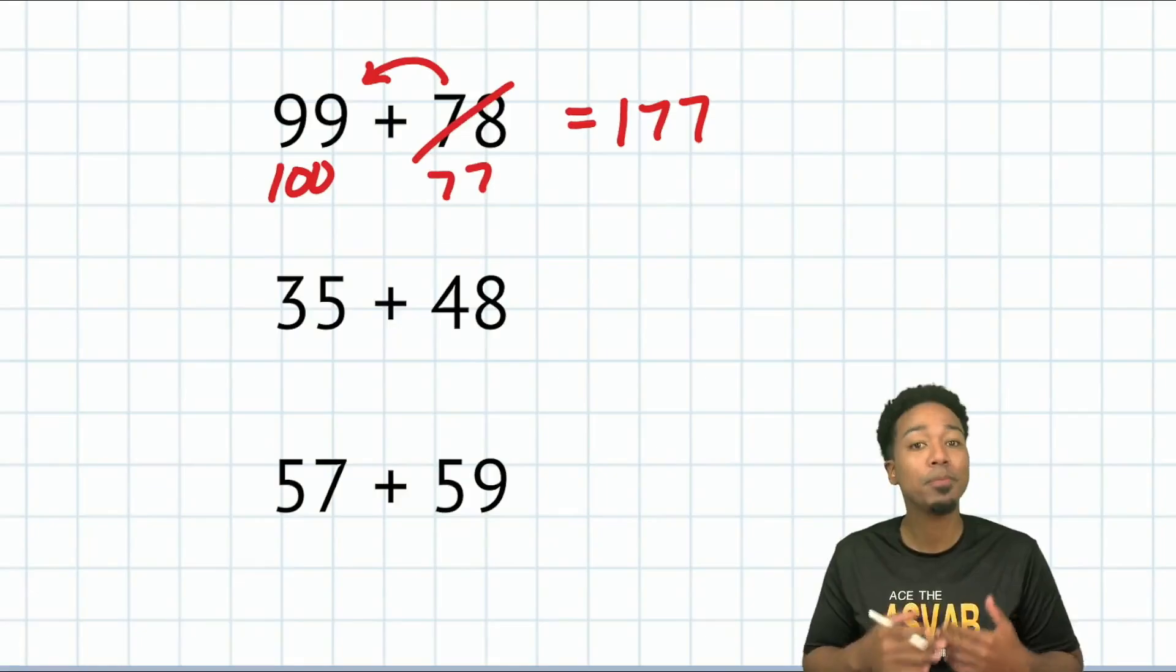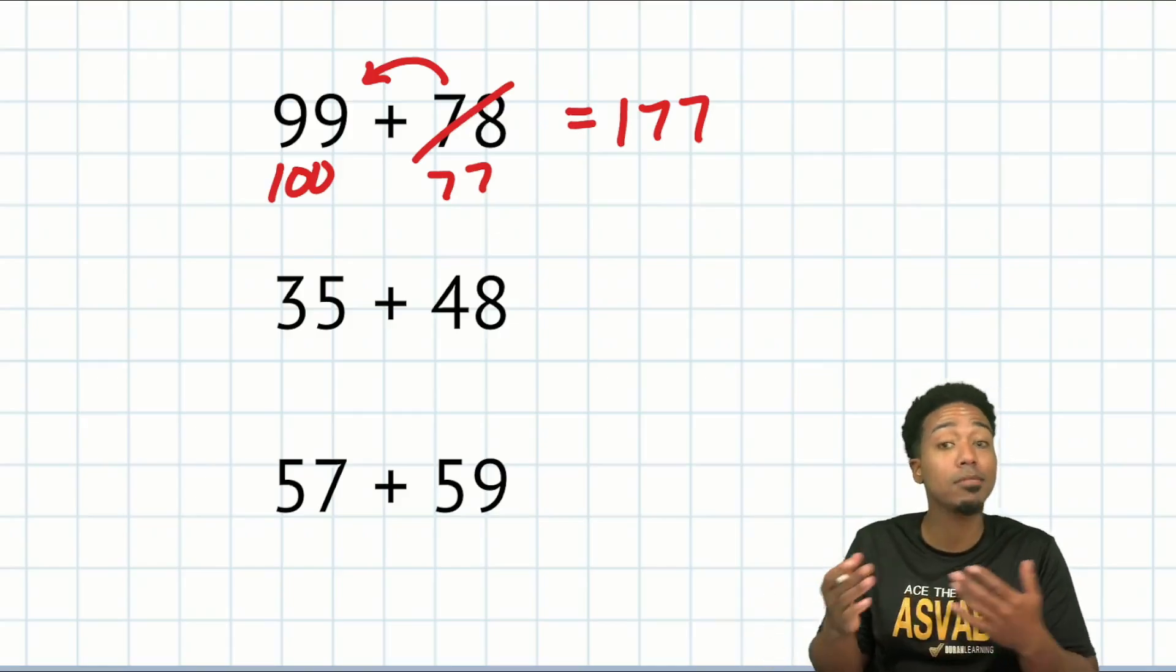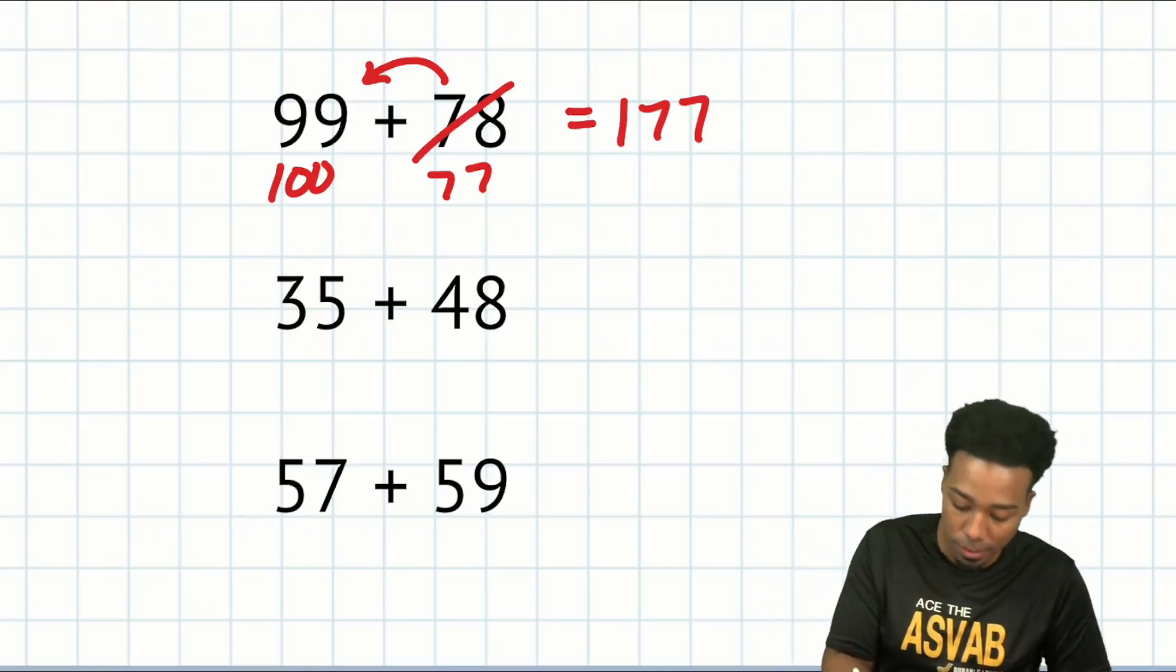Next up, 35 plus 48. 30 plus 40 is 70. 5 plus 8 is 13. So we have 70 plus 13, 83. And we're done.